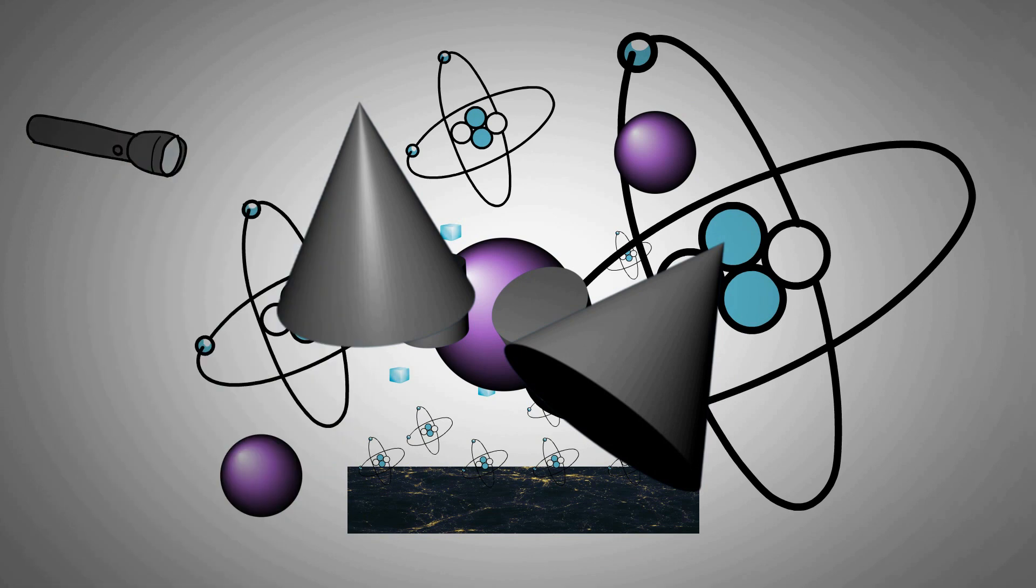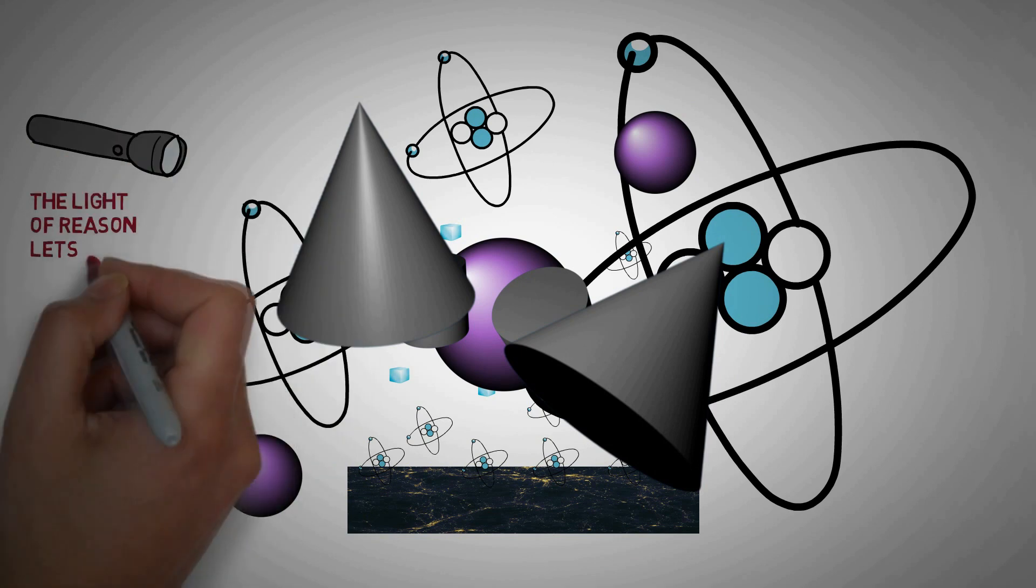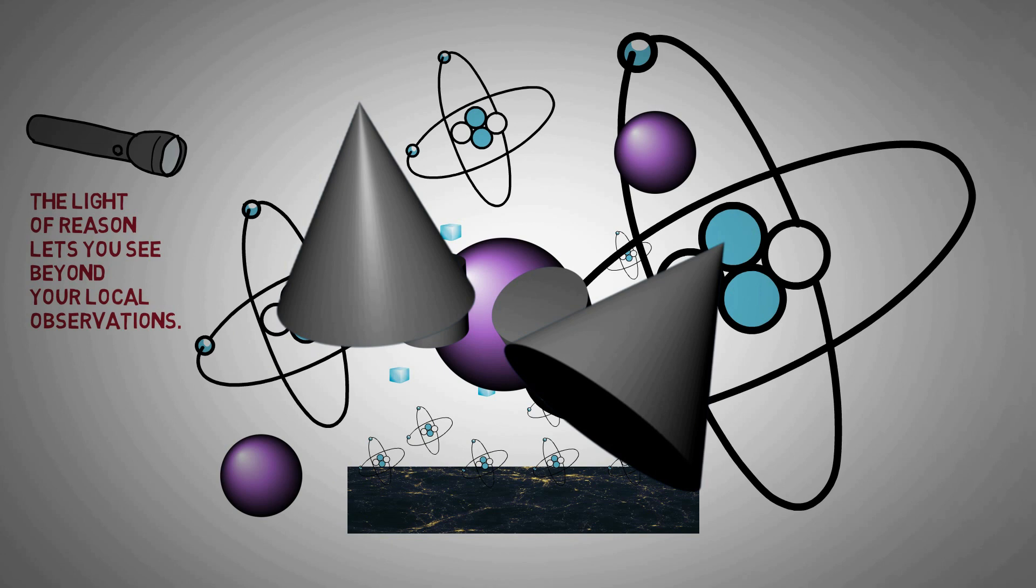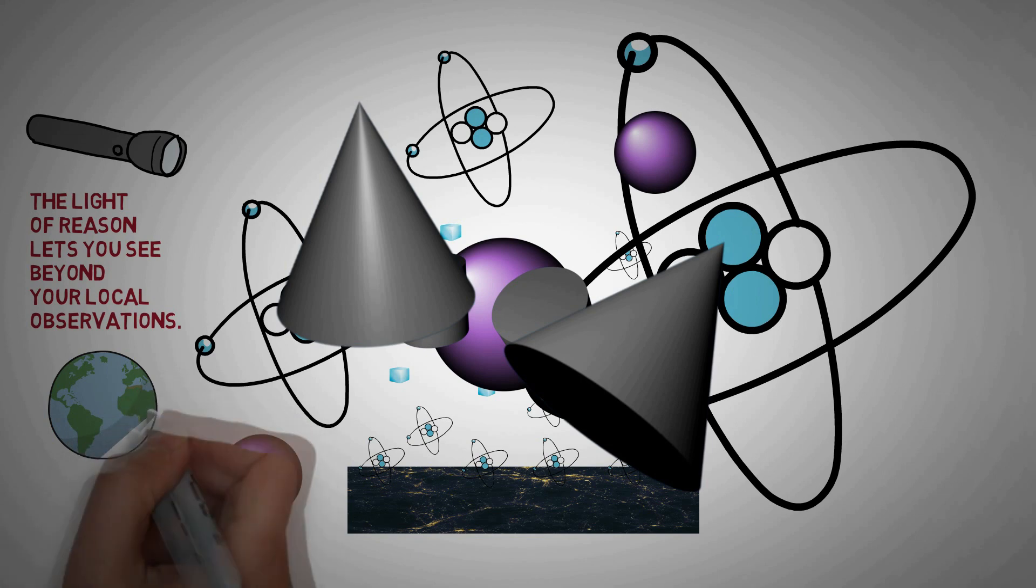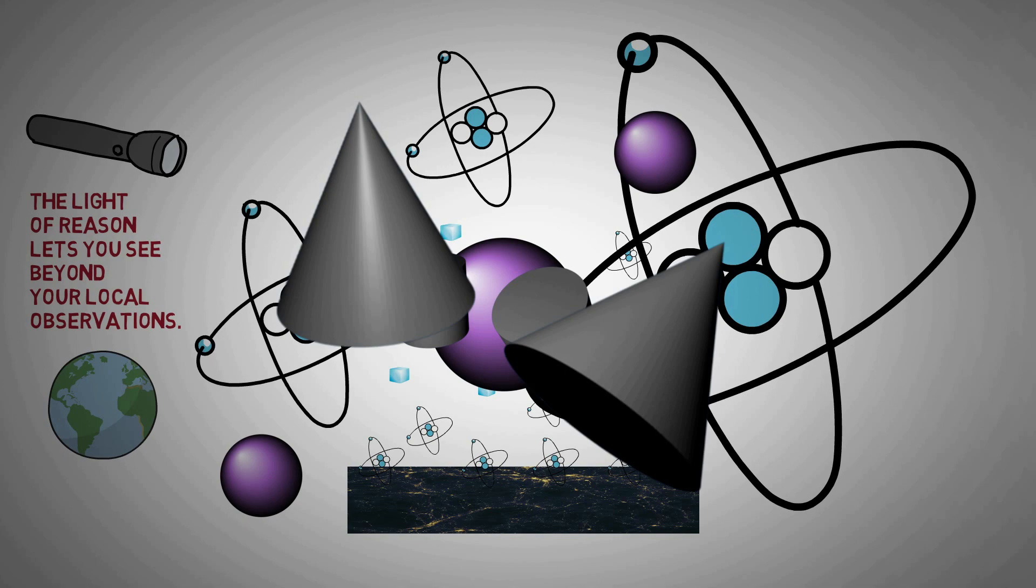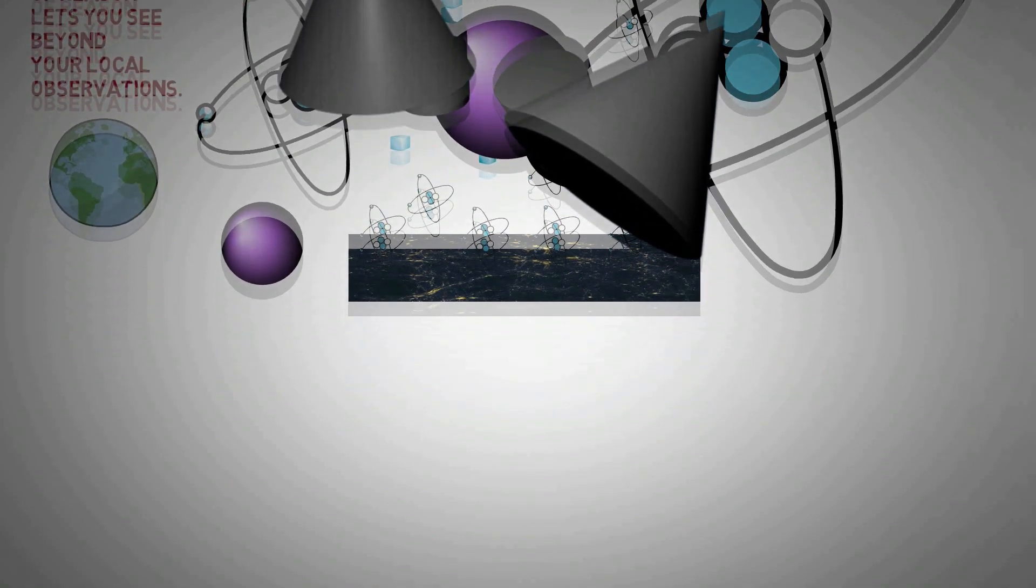We can also use the light of reason. The light of reason extends our vision beyond our local observations. For example, just as our observations of gravity on Earth let us see that gravity holds beyond the Earth, so too our observations of causal order on the Earth—things coming from other things—let us see that the causal order holds beyond the Earth.